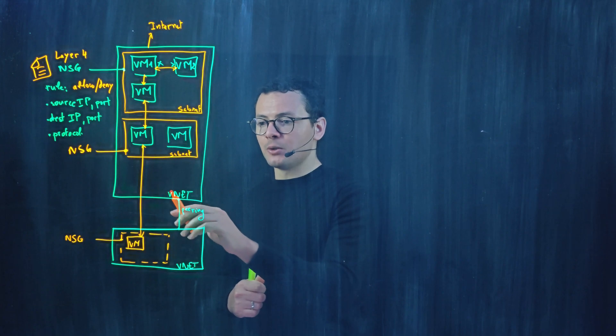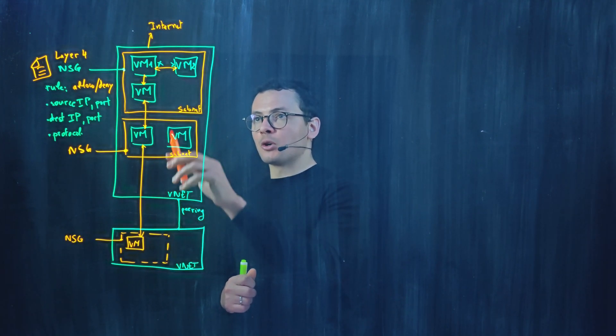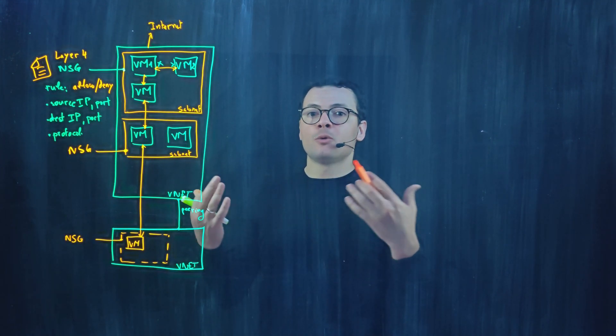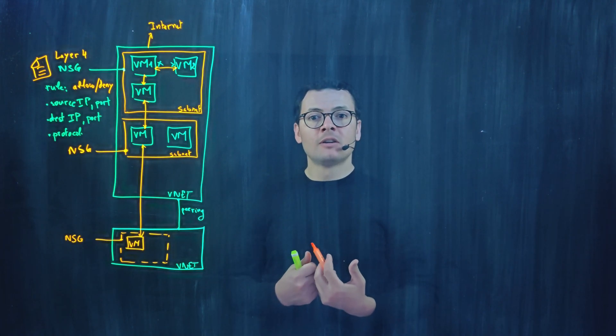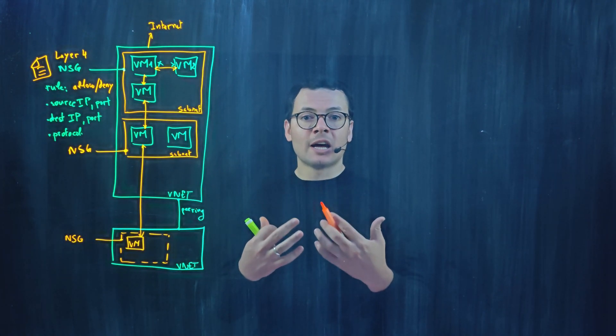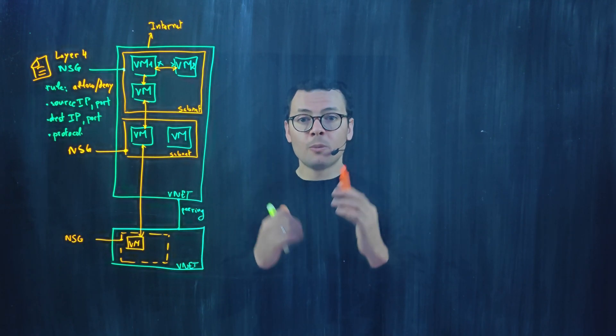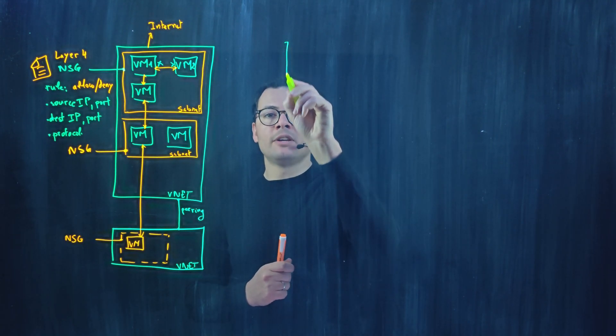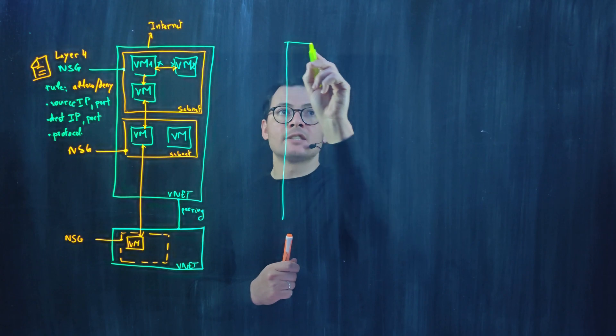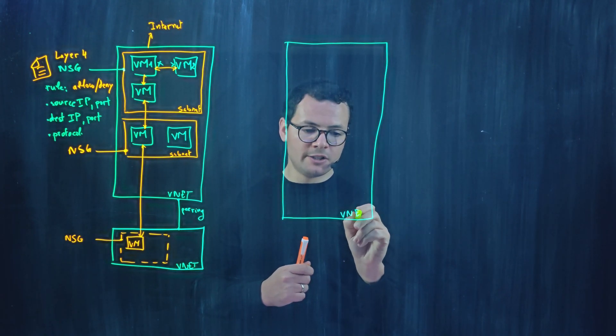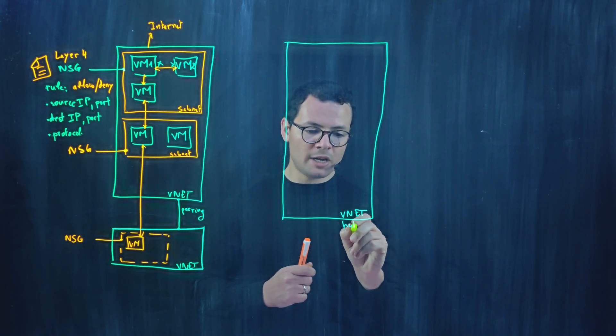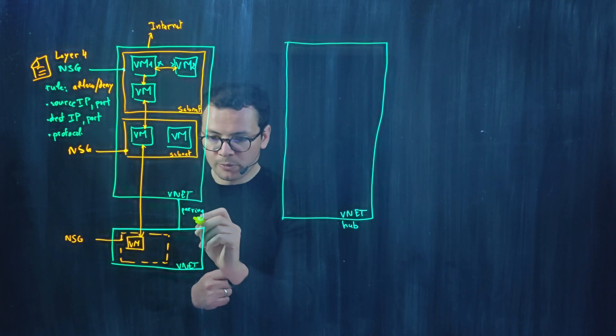That firewall could be implemented within the same virtual network where I have my workloads, or if we're using the hub and spoke model, it would be better to share that firewall as a network component within the hub network. That means I would have another network, the hub network. It's a virtual network but it will act as the hub, and those will be the spokes.